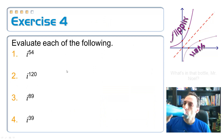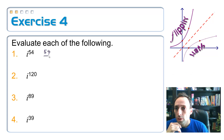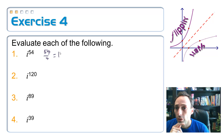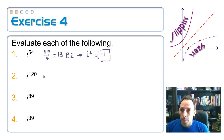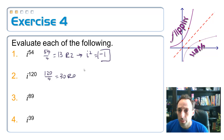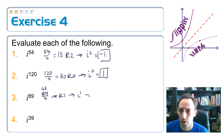Let's try some examples. For i to the 54th, divide 54 by 4: that's 13 with a remainder of 2. So i to the 54th equals i squared, which is negative 1. For i to the 120th, divide 120 by 4: that goes in exactly 30 times with a remainder of 0, so it equals i to the 0 power, which is 1. For i to the 89th, divide 89 by 4: 88 is the closest multiple, remainder 1, so it equals i to the 1st, which is i.